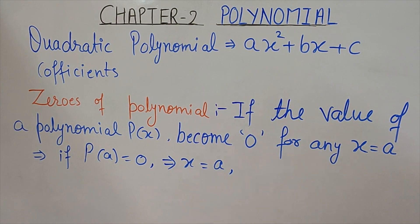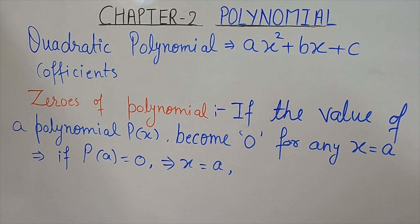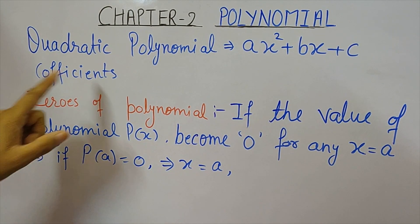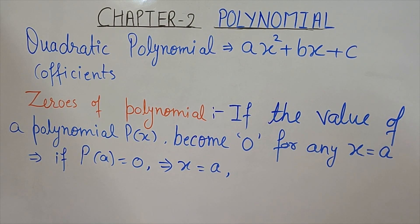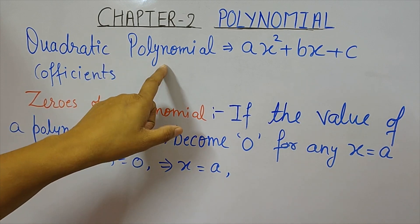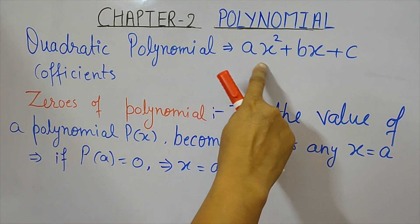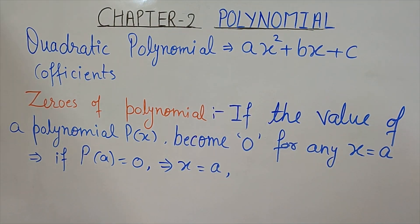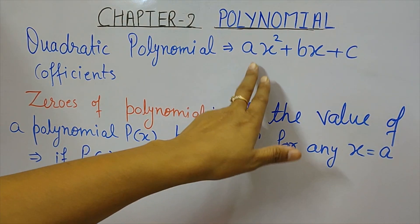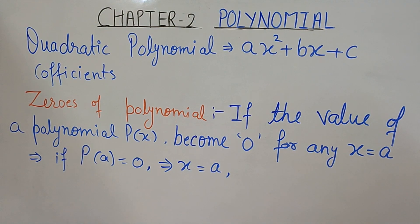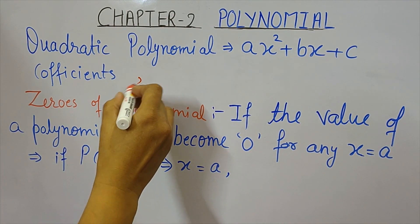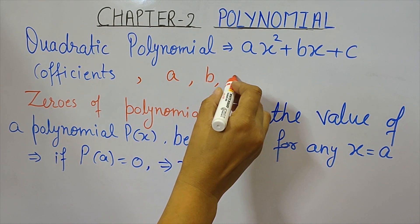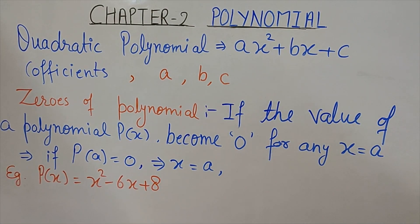Hello everyone, today we will talk about polynomials — Chapter 2, Class 10th. Our focus will be on quadratic polynomials. Quadratic means the degree is 2. The standard quadratic polynomial is generally denoted by ax² + bx + c. The coefficients are very important: coefficient of x² is a, coefficient of x is b, and the constant term is c.